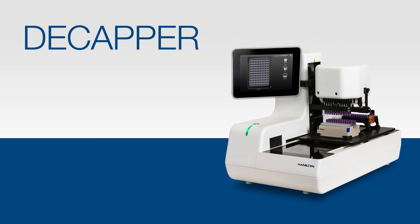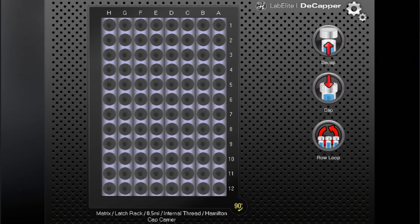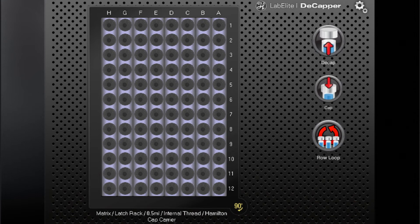Let's take a quick tour of the touchscreen. This is the system settings button, used for changing heads, adapters, or labware. Here are the decap and cap buttons, the row loop button, and the 90-degree button to select landscape or portrait mode.